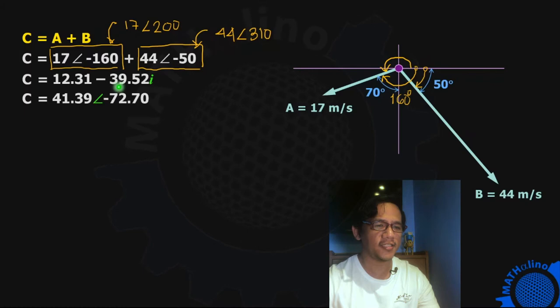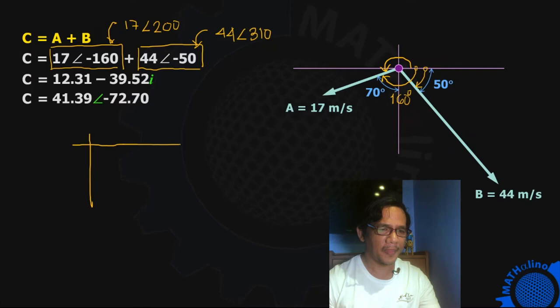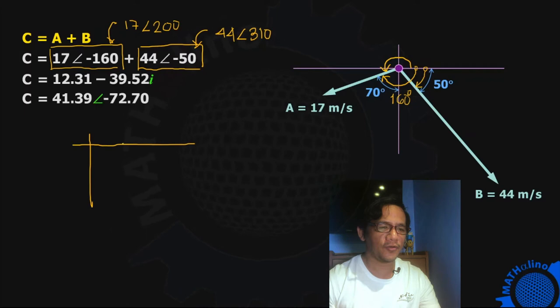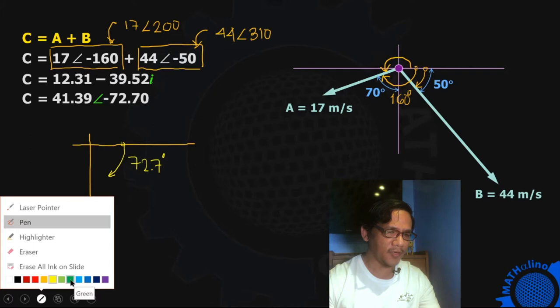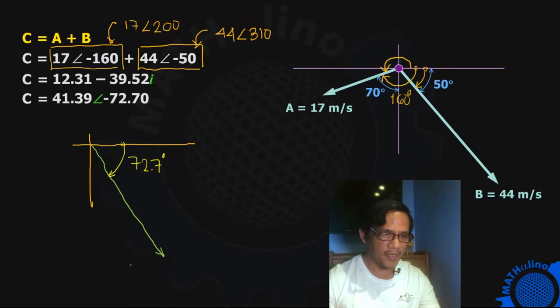That is only a calculator operation — I will show you that. How to interpret these answers? We have this complex plane with horizontal and vertical axes. We are going to rotate negative 72.7, meaning clockwise rotation of 72.7 degrees from the positive horizontal axis. This is the 72.7 degrees, which means that our resultant is this one. This is our resultant, which we call vector C. The magnitude of C is 41.39 meters per second.